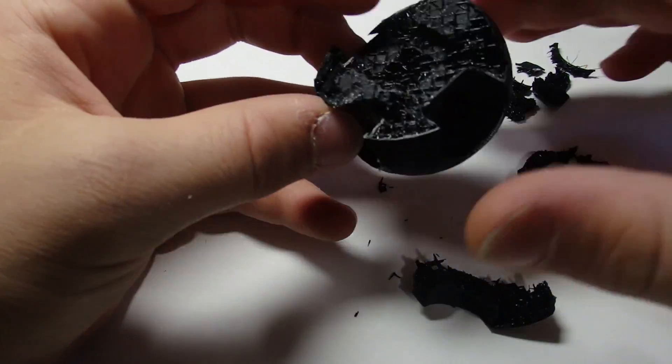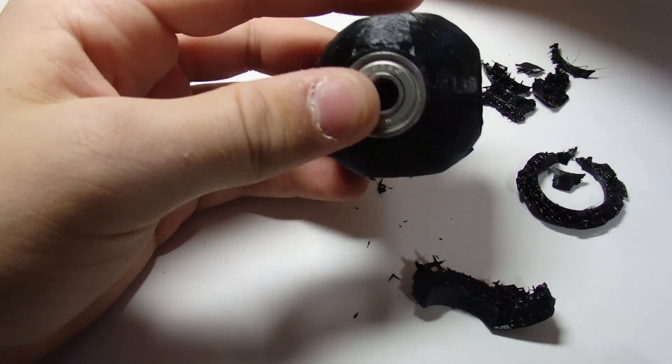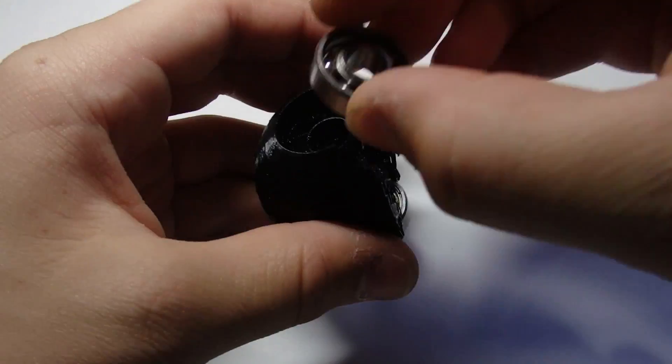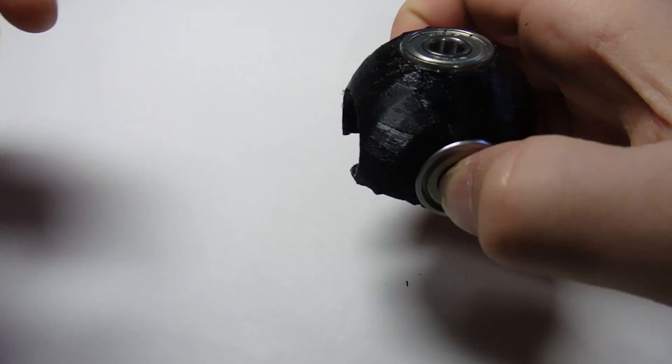Thankfully it didn't crack the concrete, it definitely wasn't that strong, but the bearings just kind of flew out everywhere. Okay so I'm just going to put the bearings back in there and yeah, it still works perfectly. I think you can still reuse this, maybe.